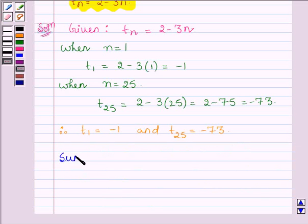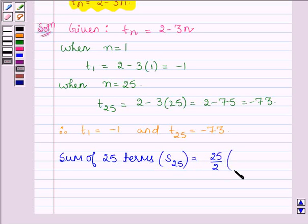So here the sum of 25 terms, denoted by S25, is equal to 25/2 into (first term + the 25th term).